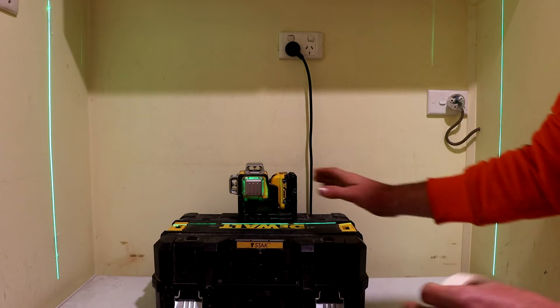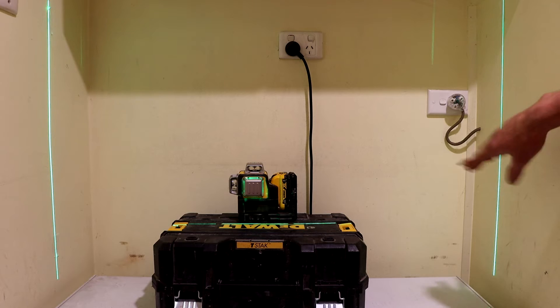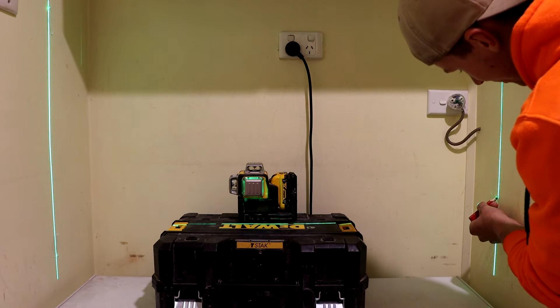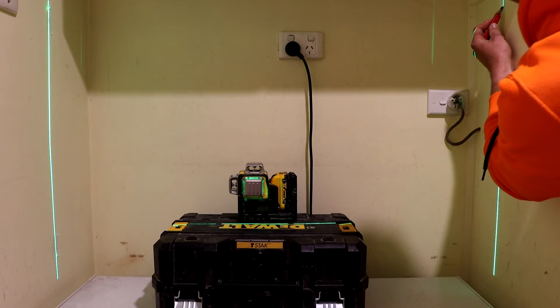Now, making sure our laser doesn't move and it stays on those marks, I'm going to do the exact same thing on this side of the wall. So I'm going to make a mark in the center at the bottom and a mark in the center at the top.